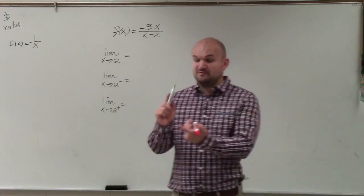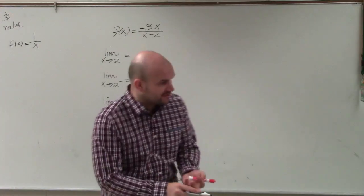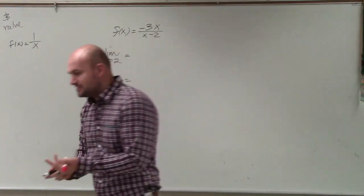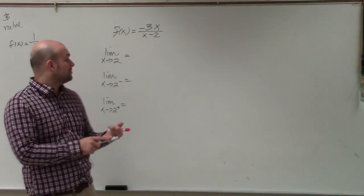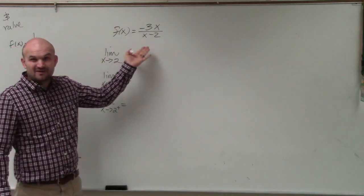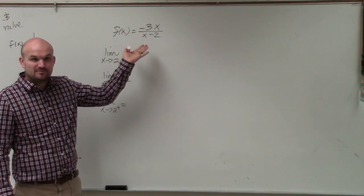So next thing we do is we look for factoring, we look for rationalizing the radical, we look for simplifying trig limits, any kind of other properties. But we're kind of stuck, right? There's really nothing else we can do. Everybody agree with me?